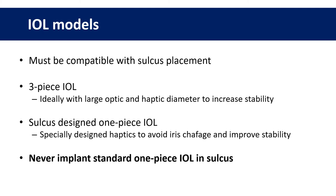So what IOL models can be used as a piggyback lens? Essentially it has to be compatible with sulcus placement. Three-piece lenses are an option, ideally one with a large optic and haptic diameter to increase stability. There are also IOLs specifically designed for the sulcus to avoid chaffage and improve stability. You should never implant a standard one-piece lens in the sulcus, as this is almost guaranteed to give problems with pigment dispersion, uveitis, glaucoma and so on.